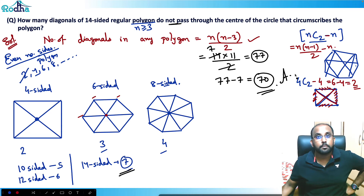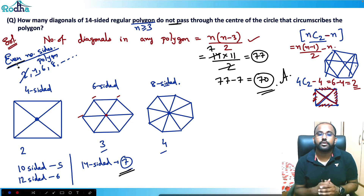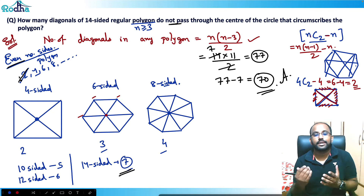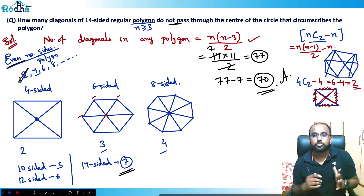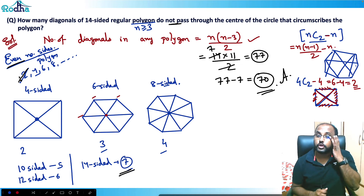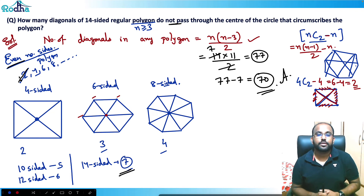Remember, this concept is only applicable to even-numbered sides — 4, 6, 8, and so on. That's how this question is solved. This question can be asked for a 12-sided, 10-sided, or 16-sided polygon — anything even. Make sure you know the fundamental behind it. Thank you.